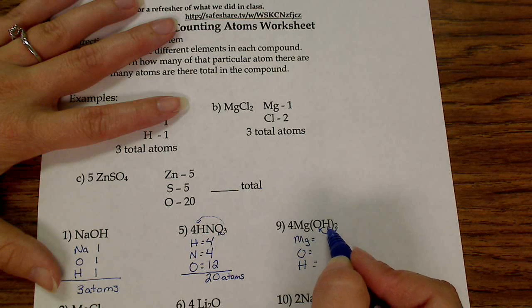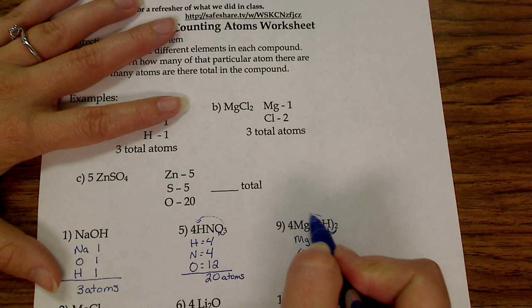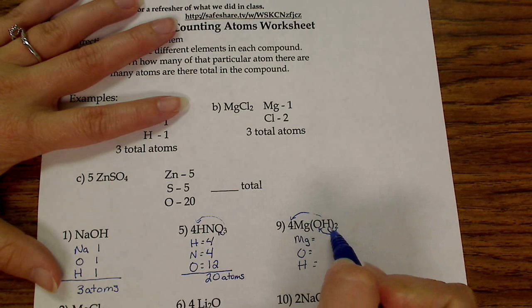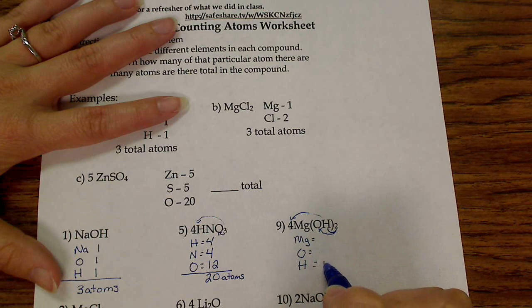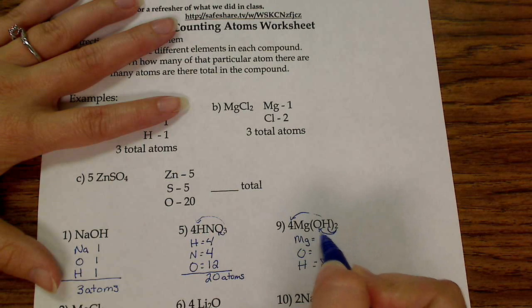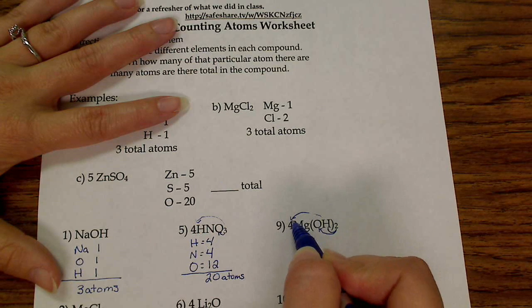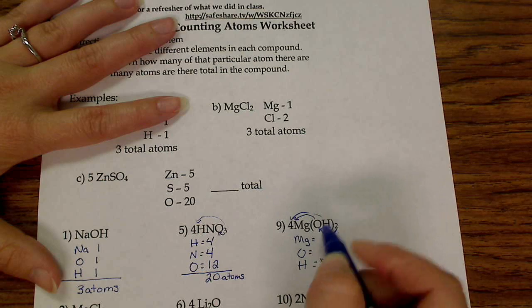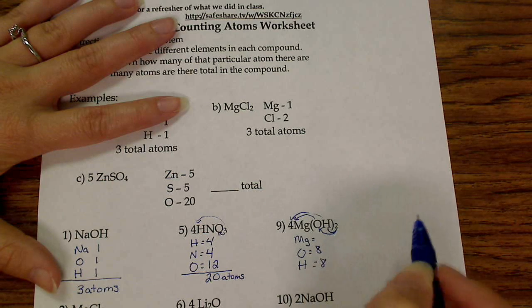So right now, hydrogen has two. Then we have to multiply it by our subscript at the beginning. So two times four is eight hydrogens. Our oxygen is two times the four in the beginning, which is eight oxygens.